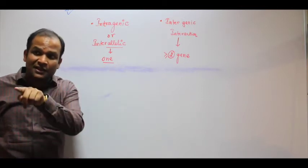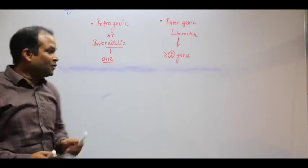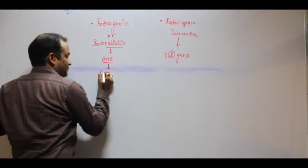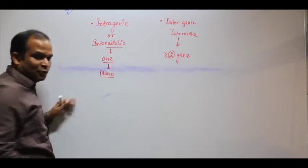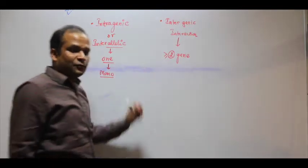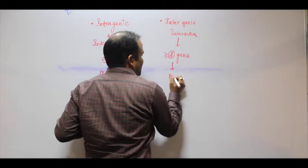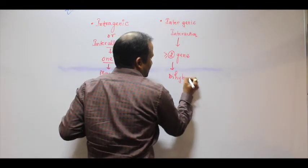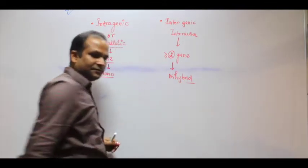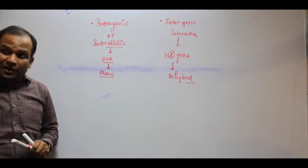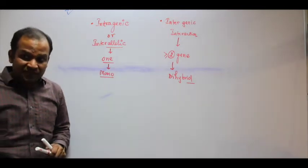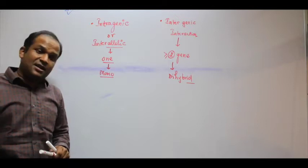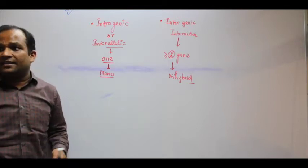In Mendel's mono-hybrid cross, he took one gene. For di-hybrid he took two genes or more. We'll discuss the mono-hybrid Mendelian cross, which is interallelic gene interaction. What were the exceptions to this interallelic gene interaction?